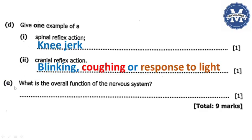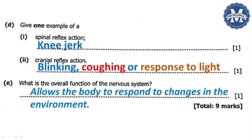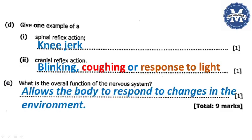Let us now move on to our next question, which is question E. What is the overall function of the nervous system? Here we need to state the overall function of the nervous system, and this question was just carrying one mark. The overall function of the nervous system, it just allows the body to respond to changes in the environment. That is the general function or the overall function of the nervous system.